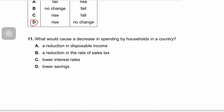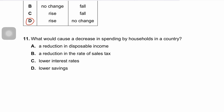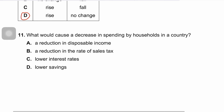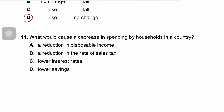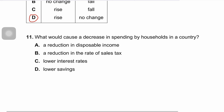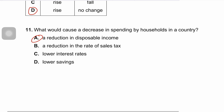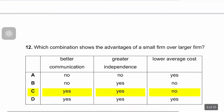Question eleven asks what would cause a decrease in household spending in a country. The correct answer is A — a fall in disposable income would obviously reduce consumption and decrease spending by households. All other options are incorrect. This is a straightforward MCQ.